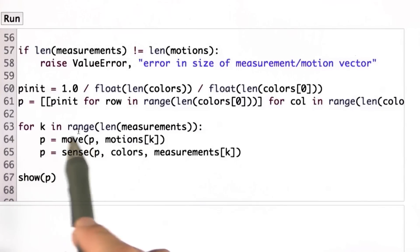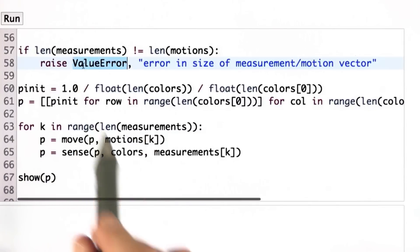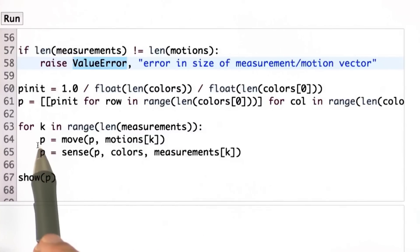And then I iterate. I go through the number of measurements, which is the same as the number of motions. I move first using the move command, by which I provide my current distribution and my motions command to obtain a new distribution. Then do the same with the sensing command. I take my current distribution, the world itself, and the measurement vector to obtain a new probability distribution. When I've done this as many times as I have measurements and motions, I output the final distribution.